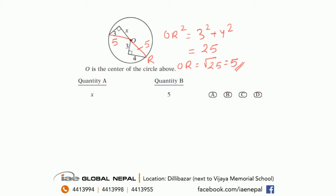So this is 5. And then in order to find x, x squared will be equal to 5 squared minus 3 squared, which would be equal to 25 minus 9, which is 16. So x would be equal to root 16, that's equal to 4. In which case, since x will be equal to 4, the quantity B will have to be larger.